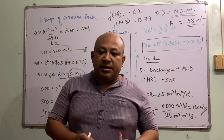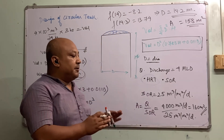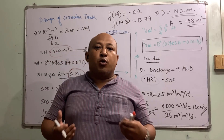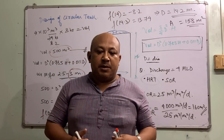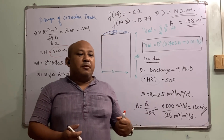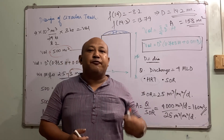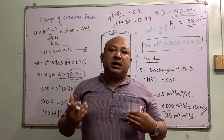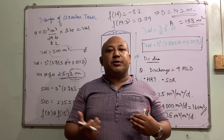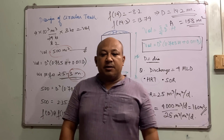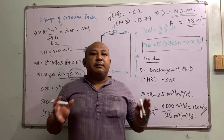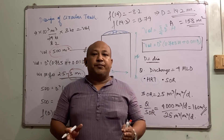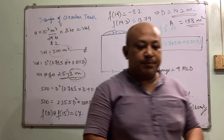In the next class, I will continue with coagulation and flocculation. When alum is added for coagulation and flocculation, what is happening inside the tank? How much alum is produced and how much sludge is produced? This is the chemistry part — I'll start a new video for that. Thank you.